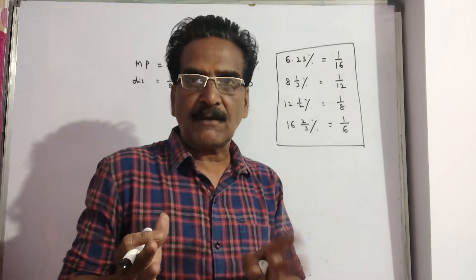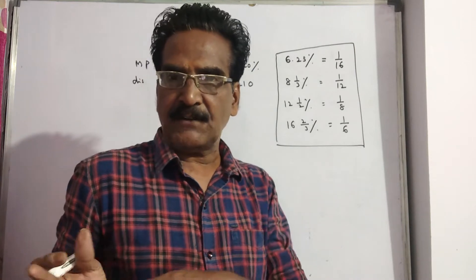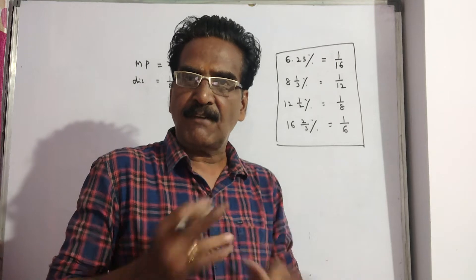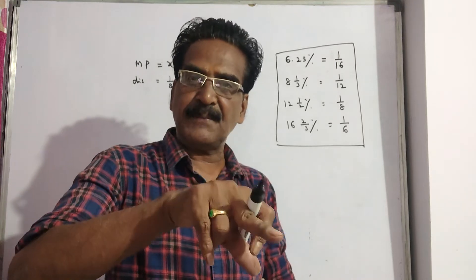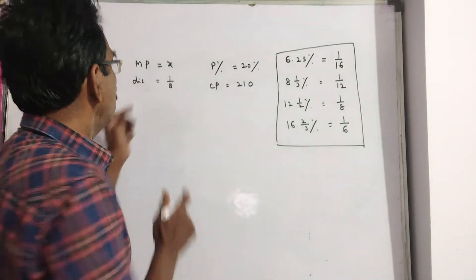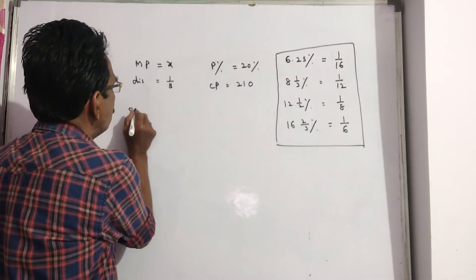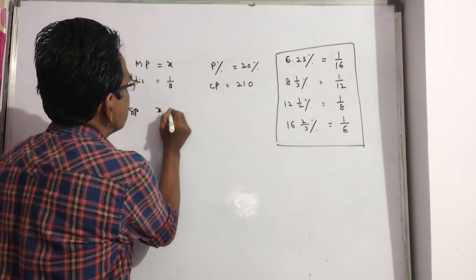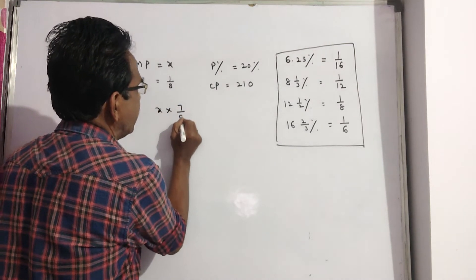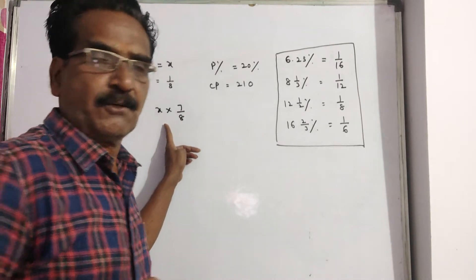Now 1 by 8 of the market price discount is given. So the sold price will be 1 minus 1 by 8, which is 7 by 8 of the market price. So the sold price is X into 7 by 8. This is the sold price.